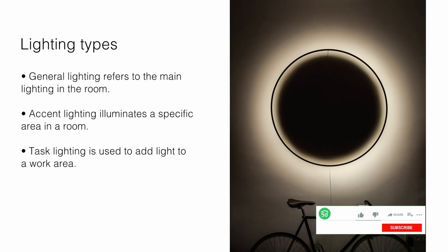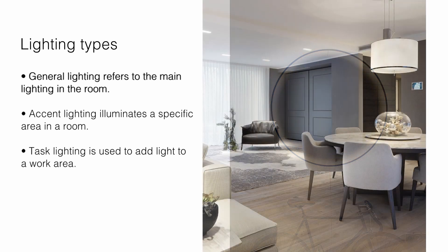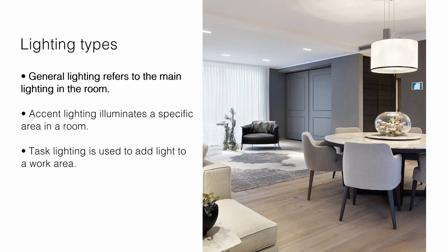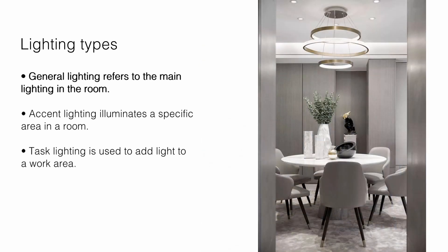Lighting types: every light in your home falls under one of these three categories — general, task, or accent. General lighting refers to the main light in the room, also known as ambient lighting. This type includes both light fixtures as well as natural light coming in from skylights or windows.